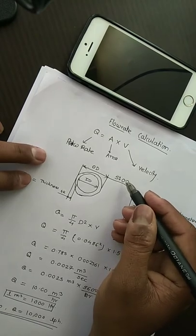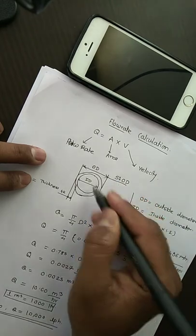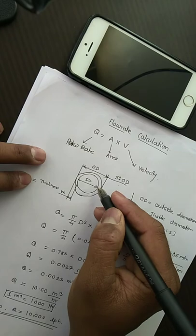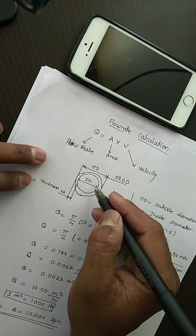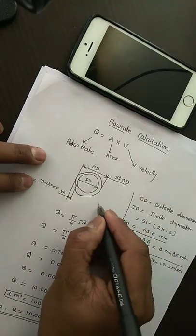51 OD is the outer diameter, so the ID will vary depending upon the thickness. Normally the thickness of pipe available in the market is 1.2 or 1.6 mm.